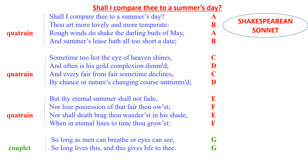Looking more closely at the structure: a quatrain is a four-line stanza. The first quatrain covers lines 1 to 4, the second quatrain lines 5 to 8, and the third quatrain lines 9 to 12. Altogether, twelve lines are arranged in three quatrains, and the concluding two lines form a couplet — two successive lines that rhyme.